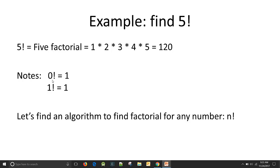Let's note some things here. 0 factorial is equal to 1. This is by definition. And 1 factorial is equal to 1. This is part of the definition of factorial. So with that in mind, let's find an algorithm to find the factorial for any number n factorial.